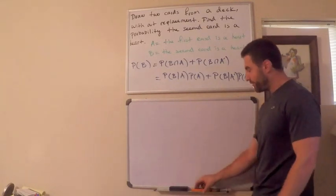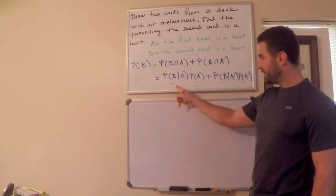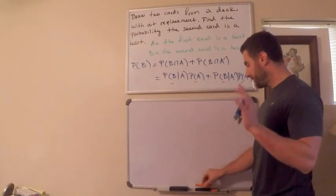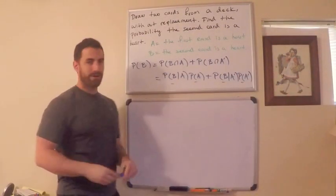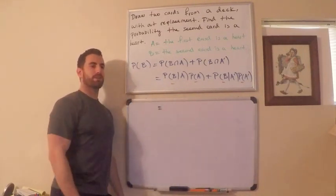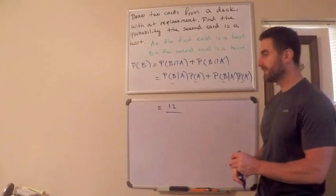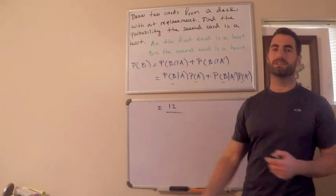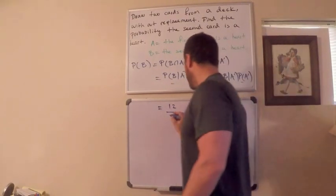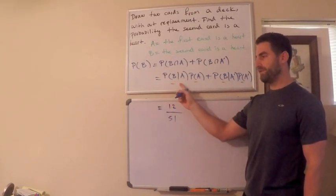These four quantities can be computed easily. Start with P(B|A): the probability the second card is a heart given the first card was a heart. If the first card is a heart, there are 13 hearts total, so only 12 remain. And since I didn't replace it, there are only 51 cards left. So P(B|A) = 12/51.